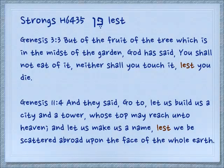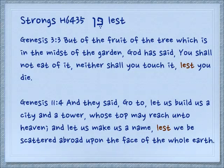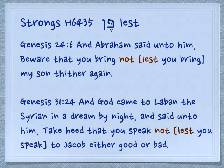Genesis 11: 'And they said, go to, let us build us a city and a tower whose top may reach unto heaven, and let us make us a name, lest we be scattered abroad upon the face of the whole earth.' Well, that didn't work out well. Sometimes we just see the translation 'not.'